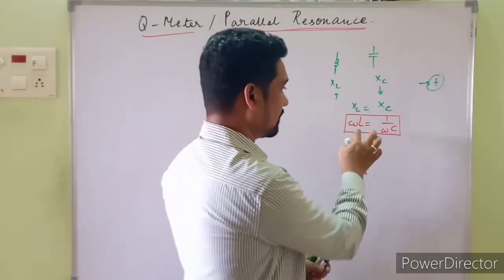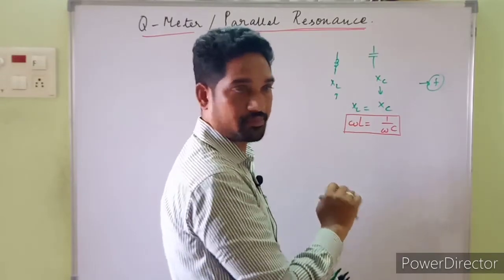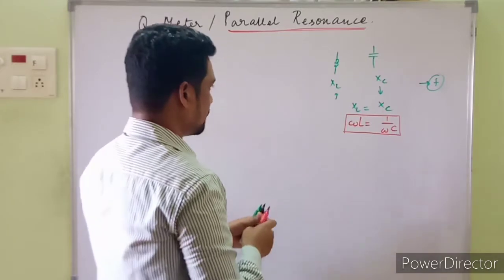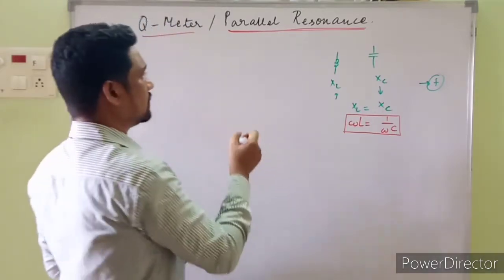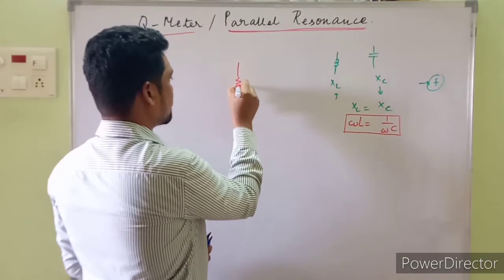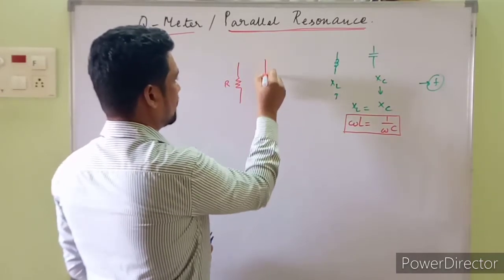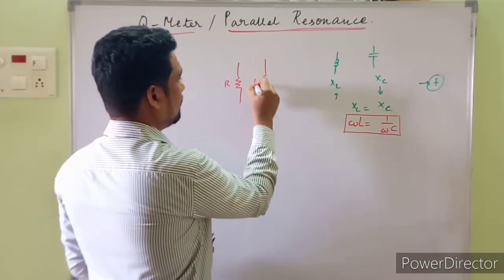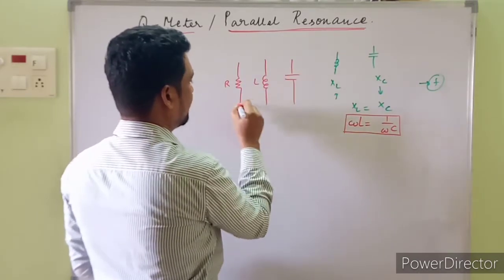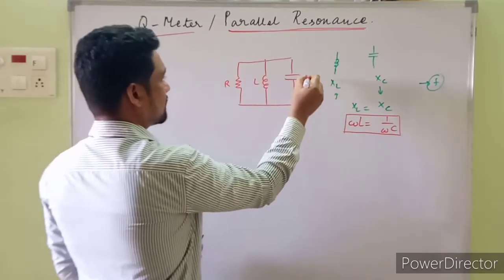This is a backup for our derivation — it supports our derivation. On the other hand, assuming a parallel RLC circuit like this one, we have a resistance R, we have an inductance L, and in another loop we have a capacitor C, and it's in parallel.